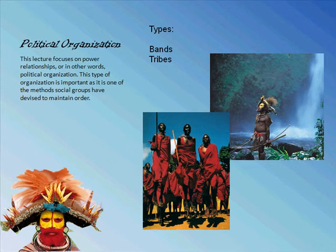Tribes often break up into smaller groups in response to threats to the environment or from outside forces. This is what we refer to as a segmentary model. Each of these smaller groups has its own head man or woman and is basically autonomous. When the threat is removed, they'll regroup. Amazonian tribes often do this, and pastoralists sometimes do this as well, linked together through a confederacy. The Qashqai in Iran are an example.